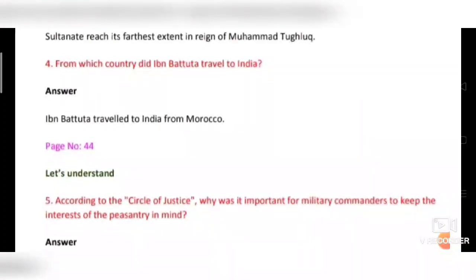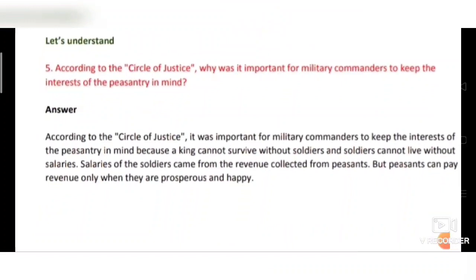Question number five from page 44: According to the circle of justice, why was it important for military commanders to keep the interest of the peasantry in mind? Answer: It was important because a king cannot survive without soldiers, and soldiers cannot live without salaries. Salaries of soldiers came from revenue collected from peasants, but peasants can pay revenue only when they are prosperous and happy.